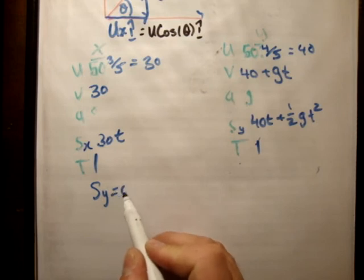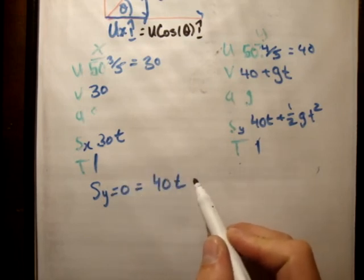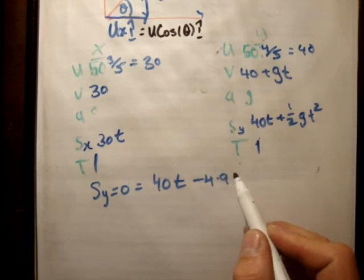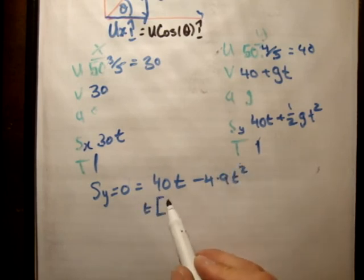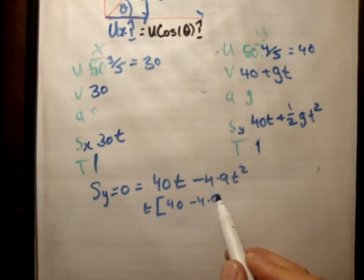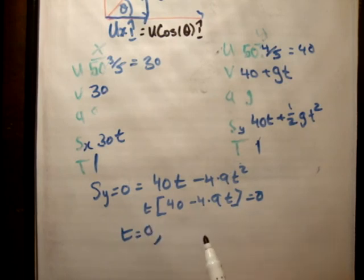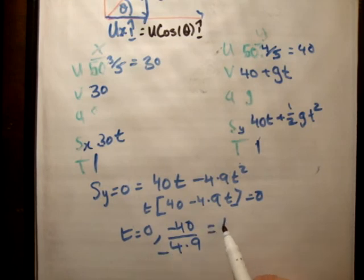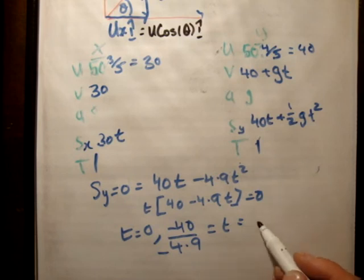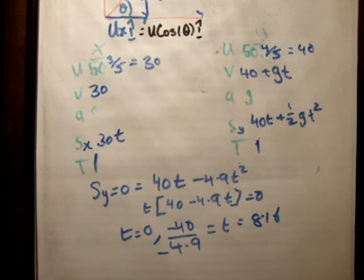So s sub y is equal to 0 and equal to 40 times t minus 4.9 t squared. So take out t again. That's equal to 0. When two things multiply together, one of them is equal to 0. And we have t is equal to 8.16 seconds. Just check that at the back of the book. Oh wait, that's the time.